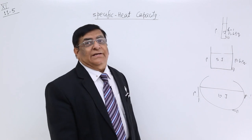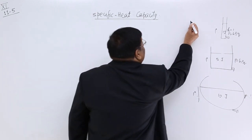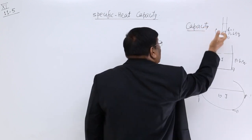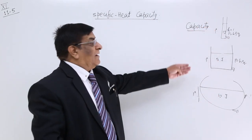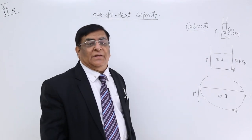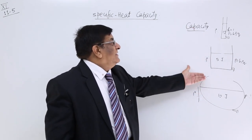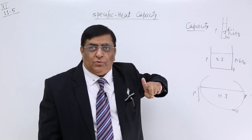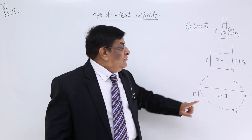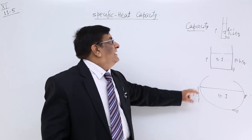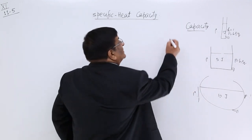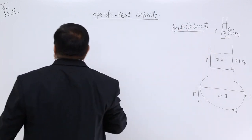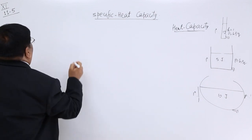What is different in them? I will say the capacity is different in them. Their capacities are different. That is why, for the same temperature rise, they take extra energy. So heat energy taken by a material to rise its temperature by 1 degree will be known as its heat capacity. This is heat capacity — the heat capacity of a material.